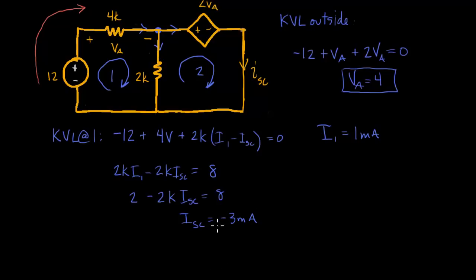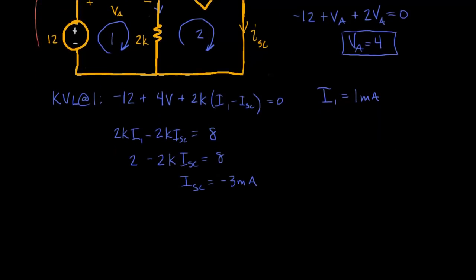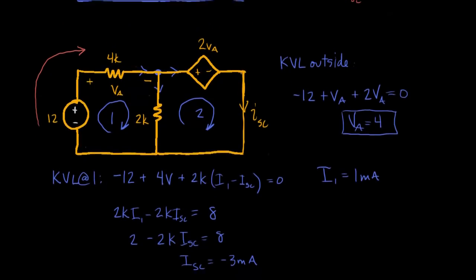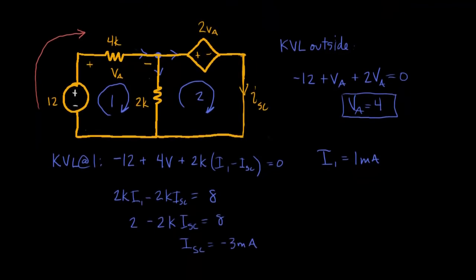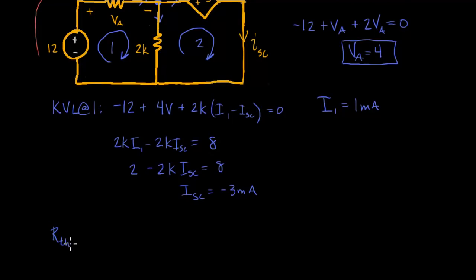And remember our sanity check, the value is negative. So we can feel confident, fairly confident that we have the question right because that's going to give us a positive resistance. So VOC is negative 12, therefore R_Thevenin equals VOC over ISC, which equals negative 12 over negative 3M. And that then equals 4K for the resistance.